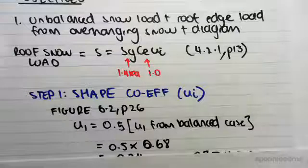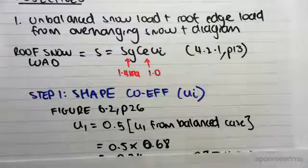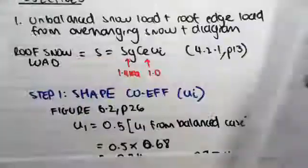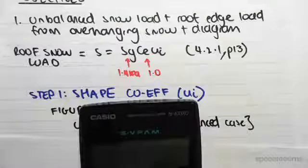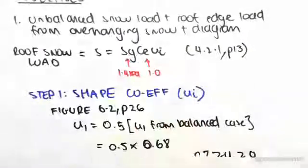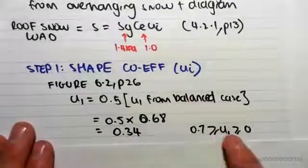...was 0.68. So it's 0.5 by 0.68, so half of 0.68 is 0.34. Okay, so 0.34, which is still between that range which is required.